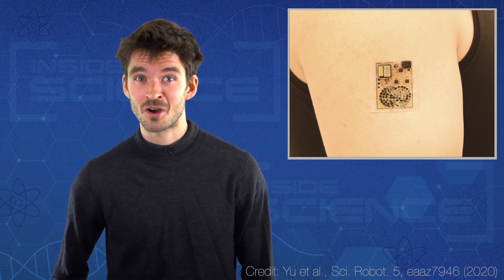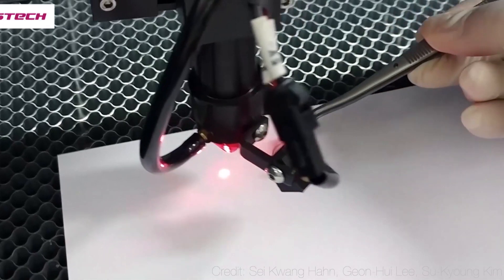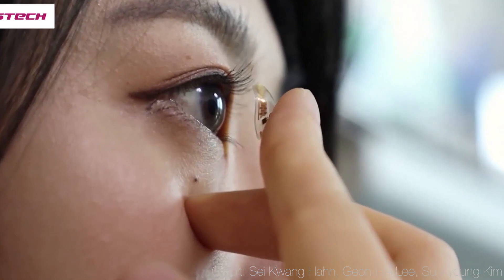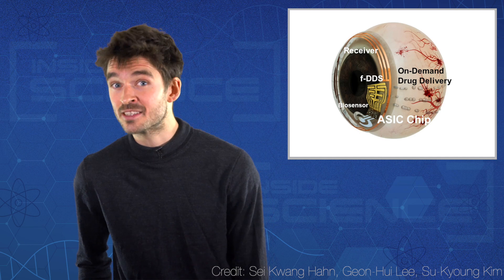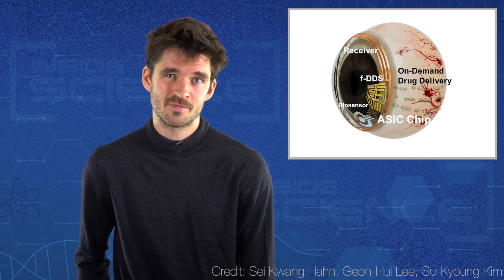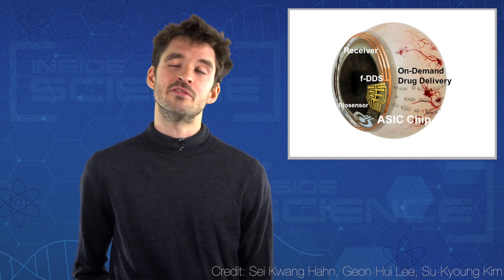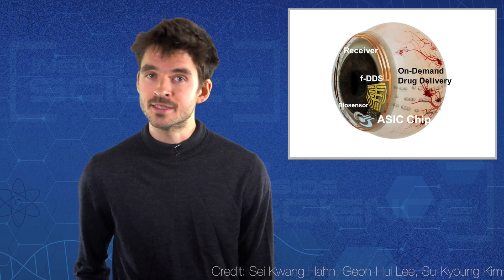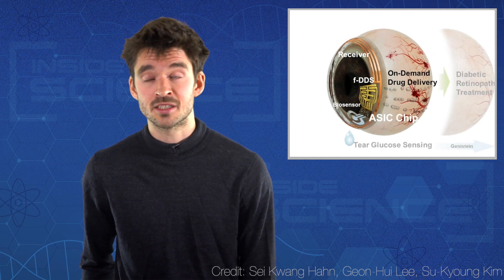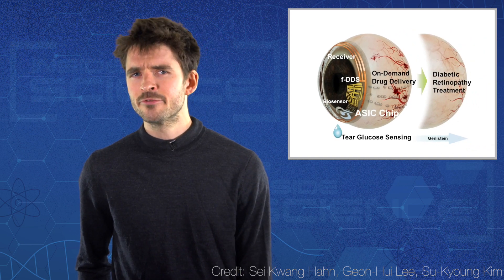unlike these smart contact lenses. These clever contacts can monitor blood glucose levels from the eye and release therapeutic drugs on demand, delivering medicine into the eye as effectively as an injection would. And they could form the basis of more convenient and comfortable treatment for eye diseases like diabetic retinopathy. It's sight for sore eyes.